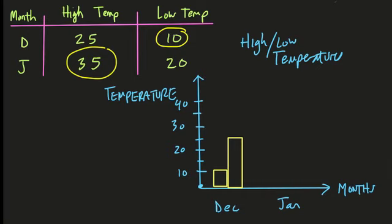And then for January, what happens? So for January, the high is 35, and the low is 20. So maybe right there.